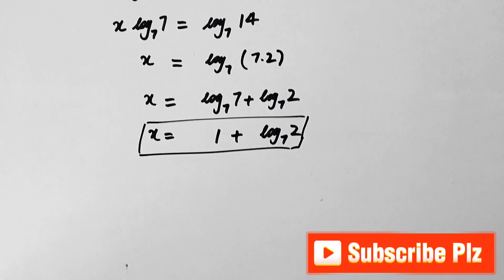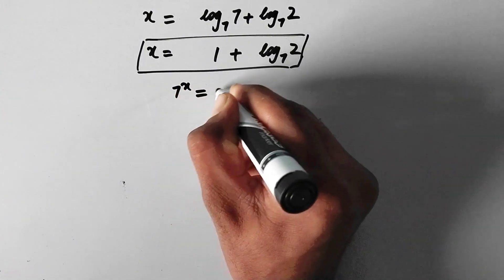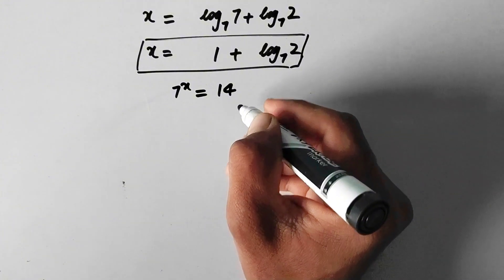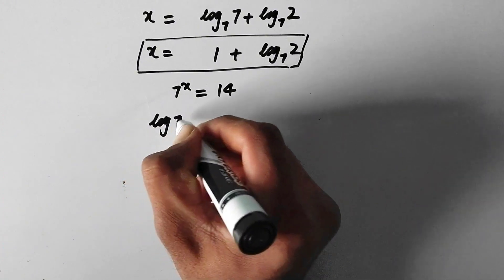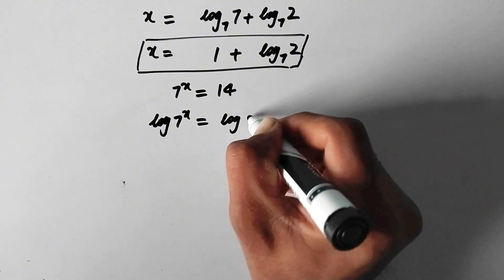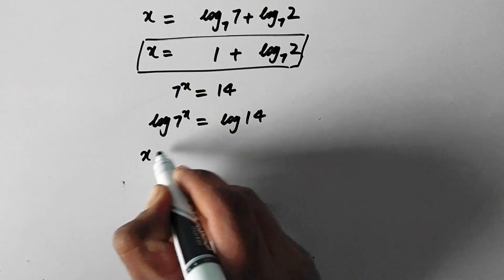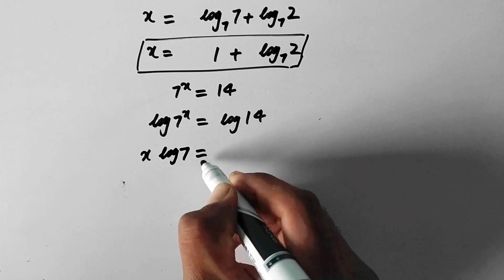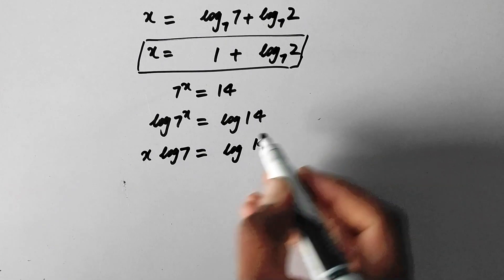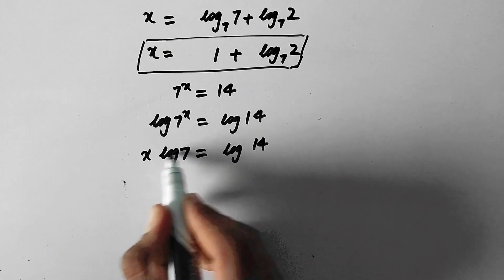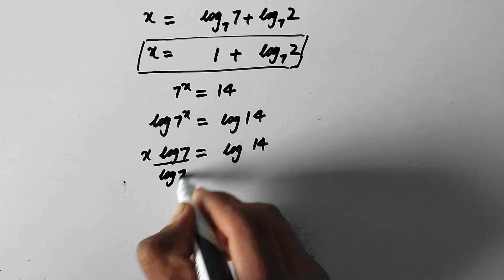Now we will solve by the other method. Our original equation is 7 to the power x equal to 14. Here we will take the common log on both sides of the equation, so it becomes log of 7 to the power x is equal to log of 14. Now the power comes before the log, so it will be x times log of 7 is equal to log of 14. Since we have to find the value of x, we need to eliminate log of 7, so we will divide both sides by log of 7.